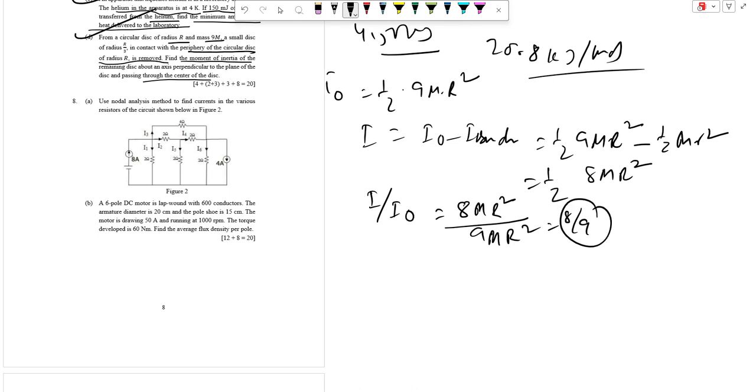Therefore, the moment of inertia of the remaining disk about the given axis is 8 by 9 times of the initial moment of inertia of the full disk.